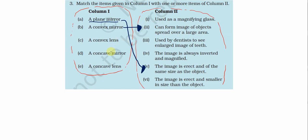Next is a convex lens. If we talk about a convex lens, it is used as a magnifying glass — this is connected to the first statement. Next is a concave mirror, as discussed earlier.